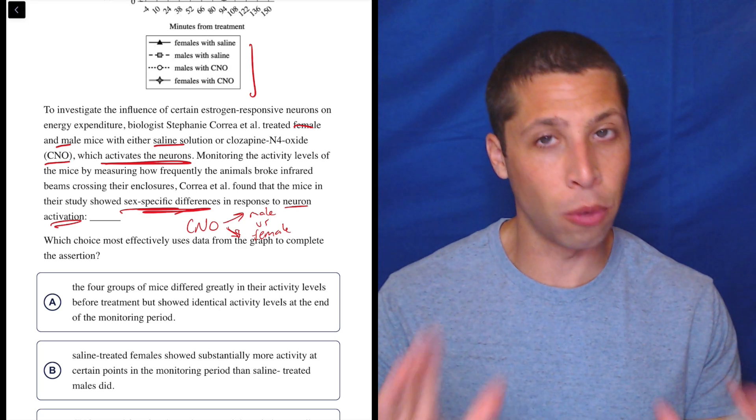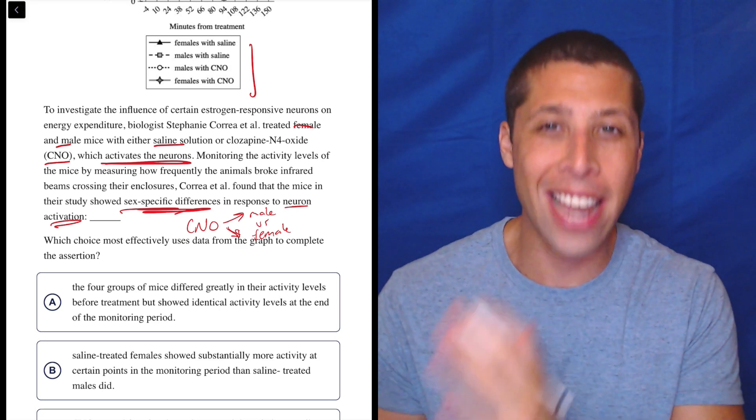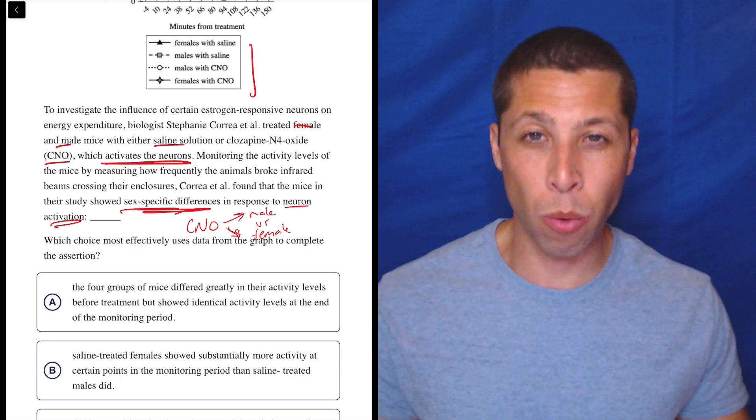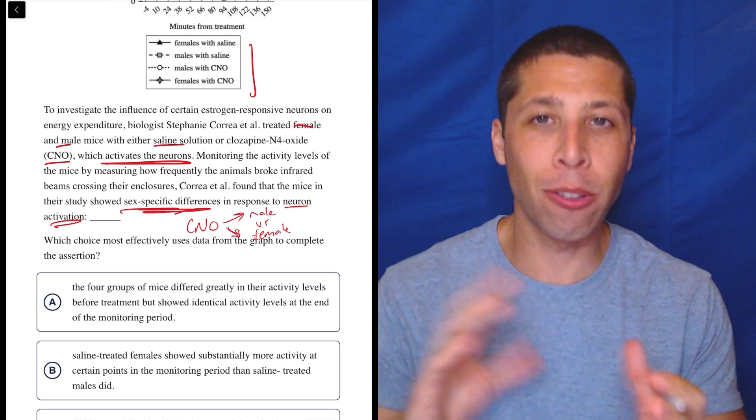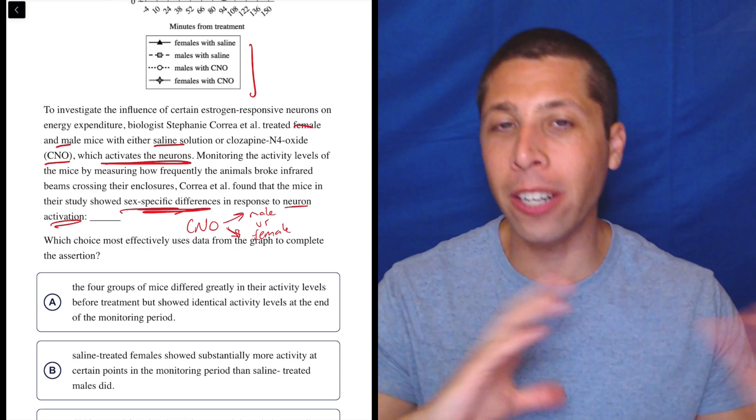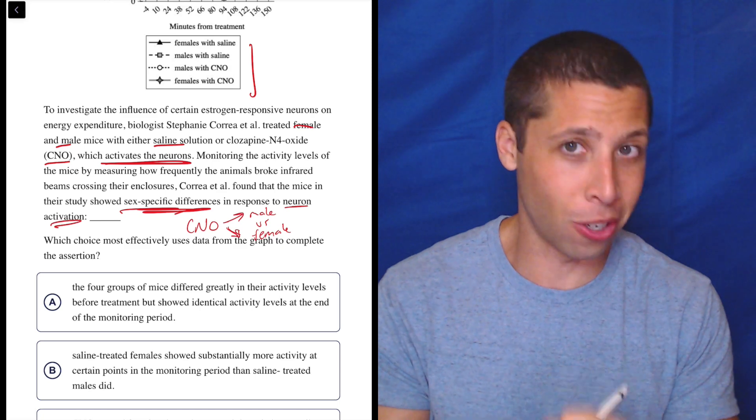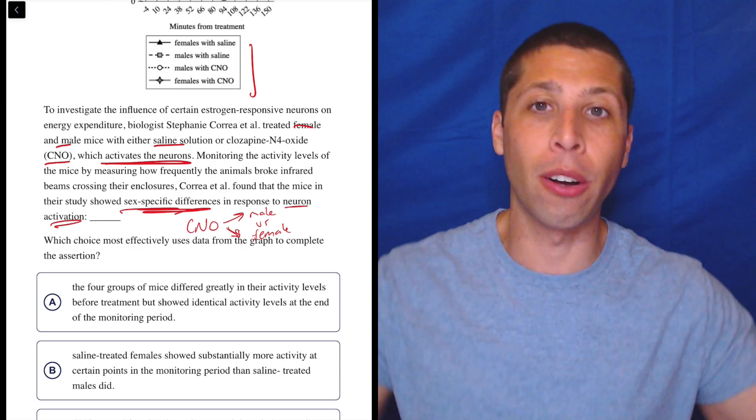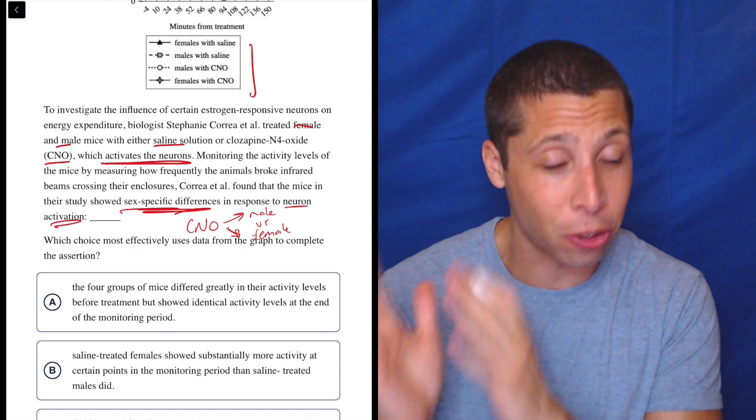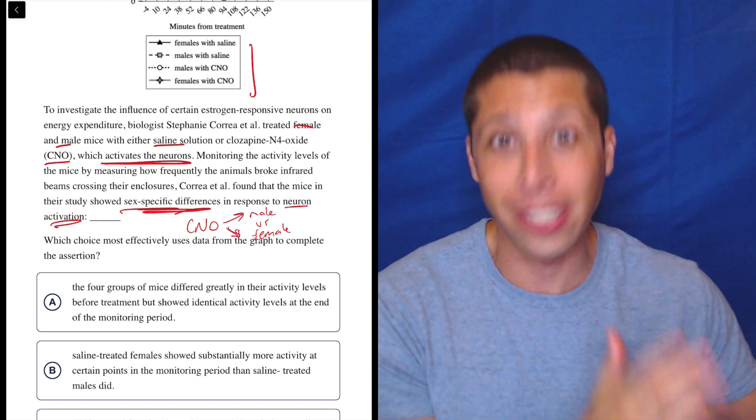This is why we're not supposed to focus on nouns when we're focusing on strong words, because the nouns are going to change. They're going to use different words and we're going to get really attached to certain nouns. And then if we don't see them, we're like, oh, it doesn't matter. But they're talking about CNO without using the letters CNO.